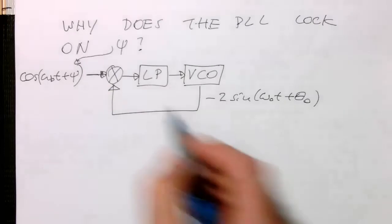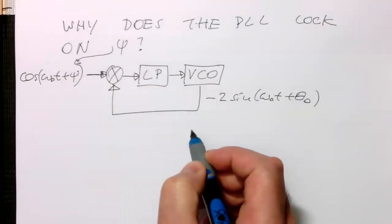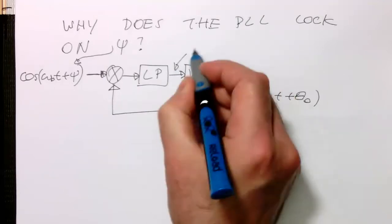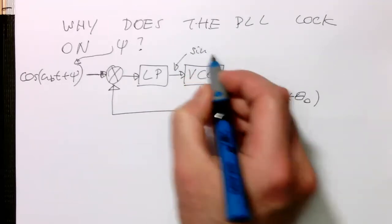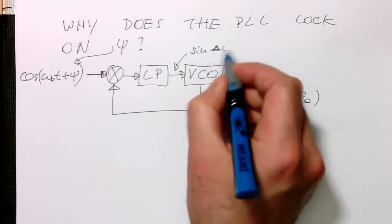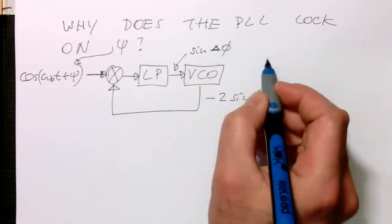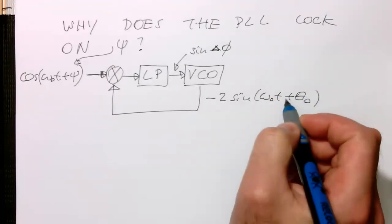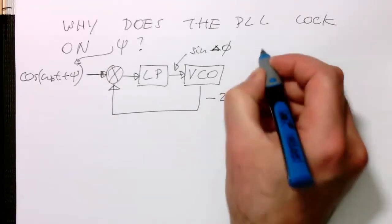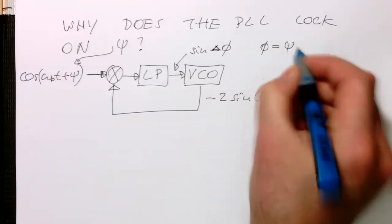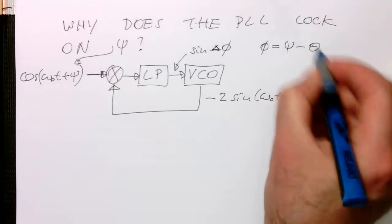And this sends us back here. And so we know that at this point here, the signal sine of delta psi is our error signal between these two phase angles here. So whereas delta psi is psi minus theta zero.